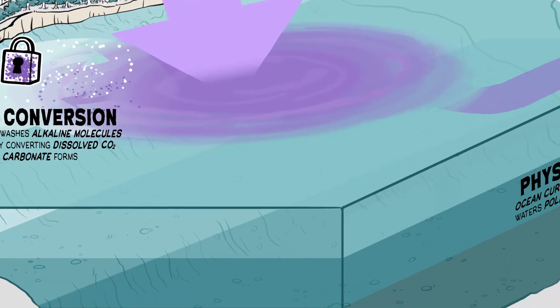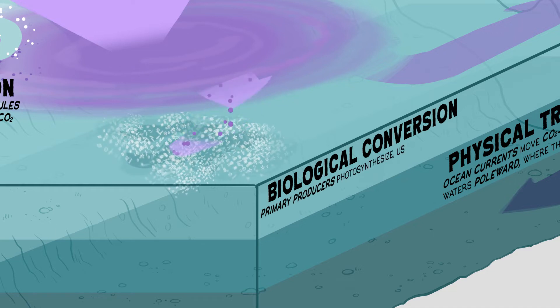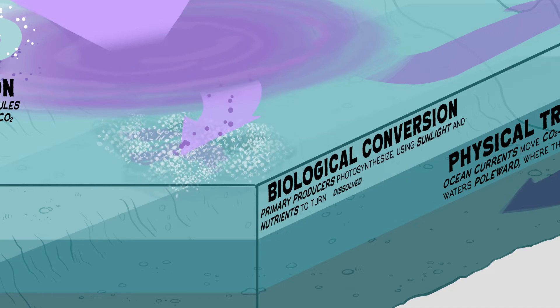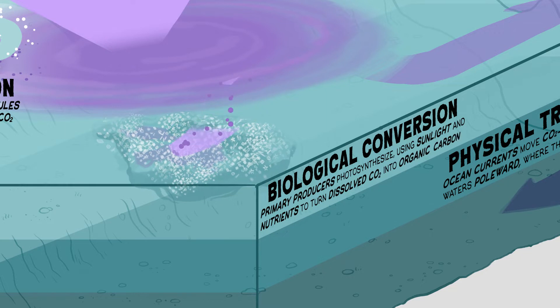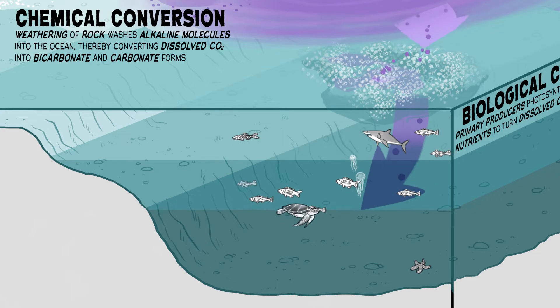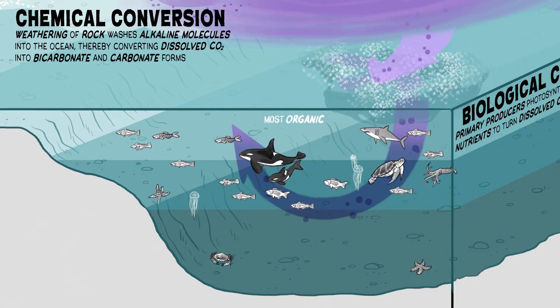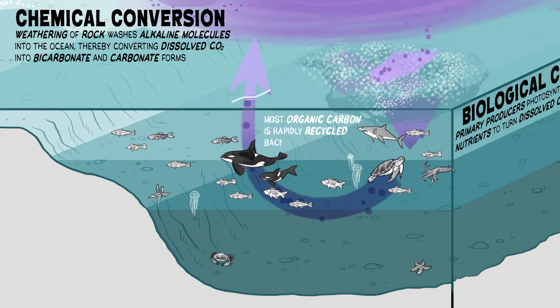On much shorter timescales, primary producers photosynthesize, using sunlight and nutrients to turn dissolved CO2 into organic carbon that fuels the food web. As organisms feed on one another, and trillions of microbes digest even the smallest of particles, most organic carbon is rapidly recycled back into CO2.